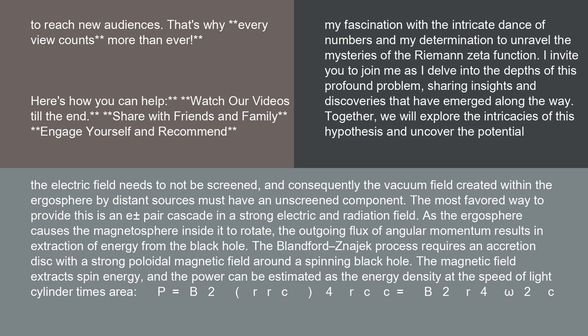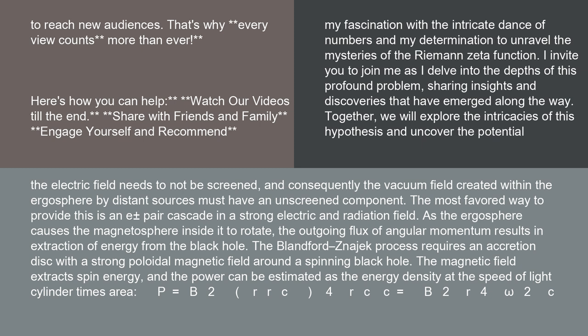P equals B squared over C. For the speed of light cylinder radius r_C, this gives P equals B squared times r_C to the fourth times omega squared over C, where B is the magnetic field strength, r_C is the Schwarzschild radius, and omega is the angular velocity.